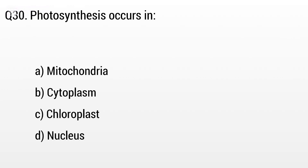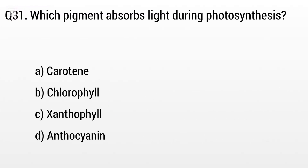Question 30. Photosynthesis occurs in: Option A: Mitochondria, B: Cytoplasm, C: Chloroplast, D: Nucleus. The right answer is option C, Chloroplast.